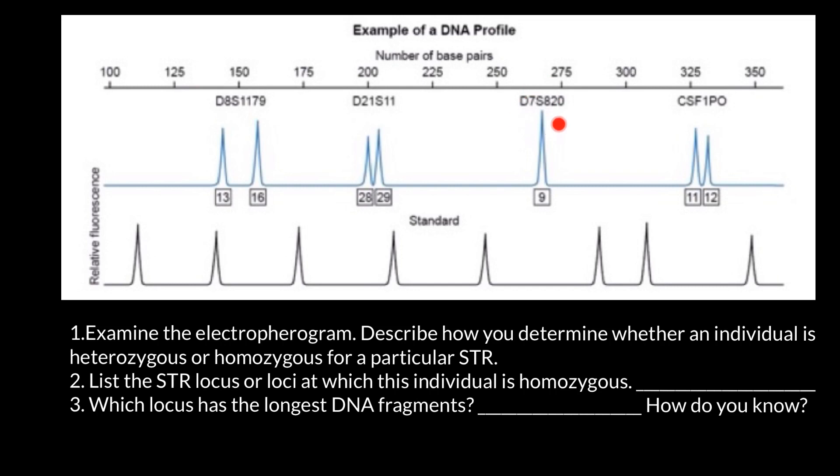But at the locus D7S820, we see one large spike. This gives me information that this person is homozygous for this locus. Some of you may think, why am I so sure? Maybe just the second chromosome at this particular place or locus has a mutation, and we just lost the second spike here due to mutation at the site where primers have to attach.